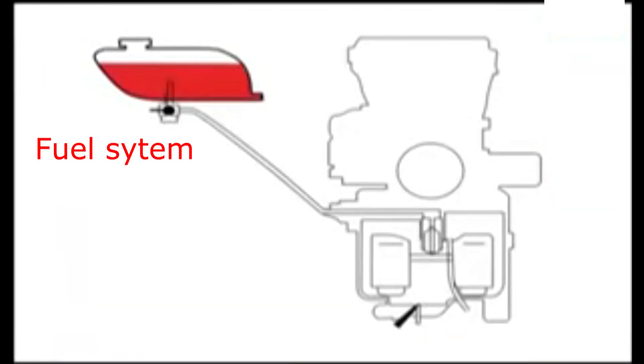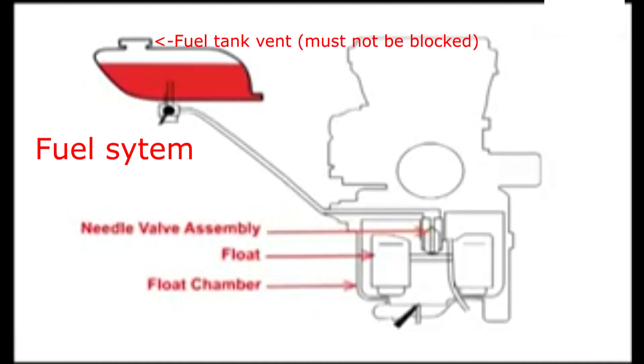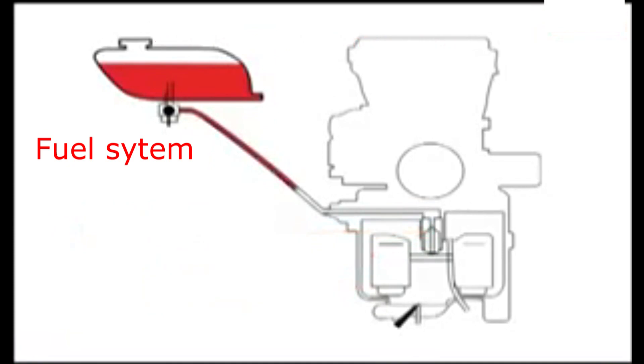Before we can get too far into how these things work, we need to look at the entire fuel system of a typical motorcycle. You have the fuel tank, the fuel shutoff valve, the needle valve assembly, the float, and the float chamber. Most problems can start right there in the fuel tank.